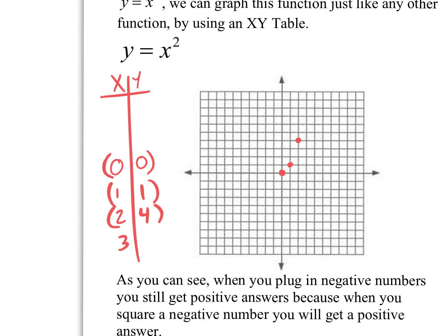How about plugging in 3? What happens when I plug in a 3? What's 3 squared? It's 9. So the input 3 gives us the output 9. 3 on the x and 9 on the y — that's way up here, at location (3, 9). So let's put a dot right there.